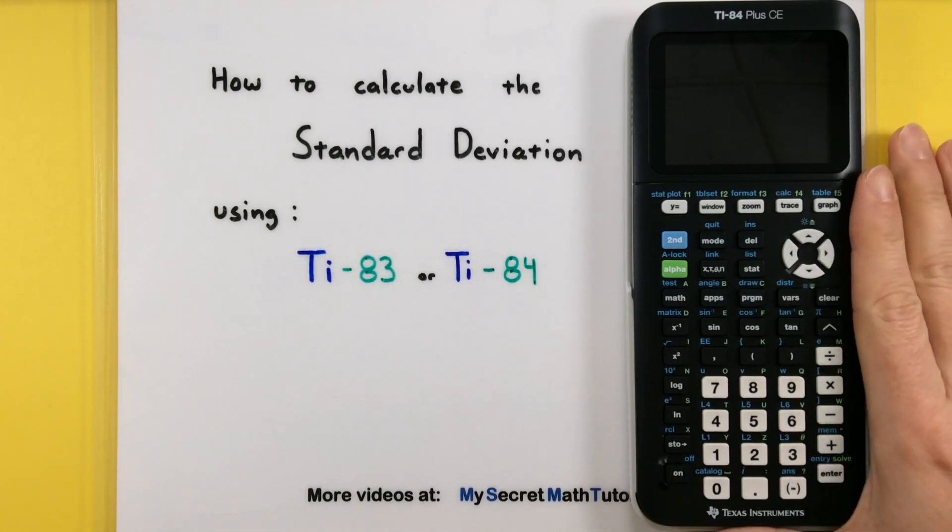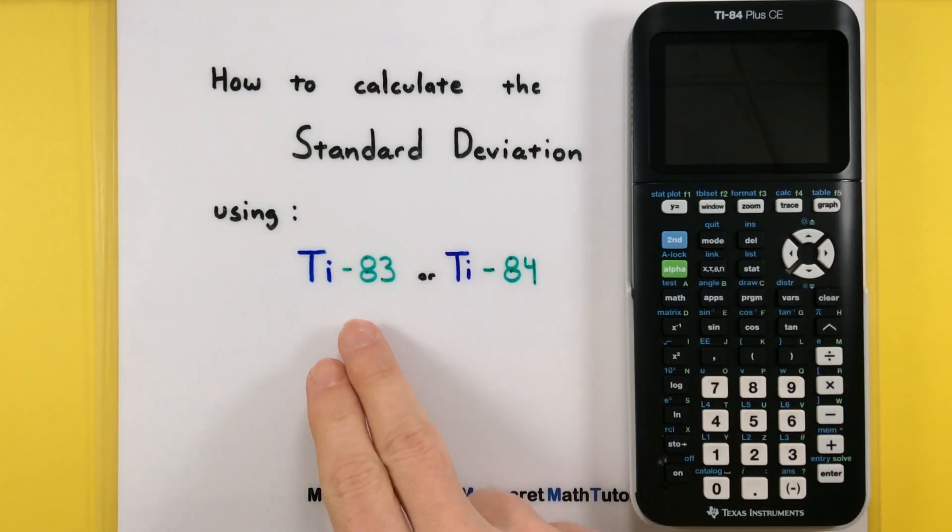Now specifically I'm going to use this guy over here, a TI-84 Plus CE, but really these steps work great if you have just a regular old TI-83 or TI-84. The menus will look slightly different but they'll be the same selections along the way.